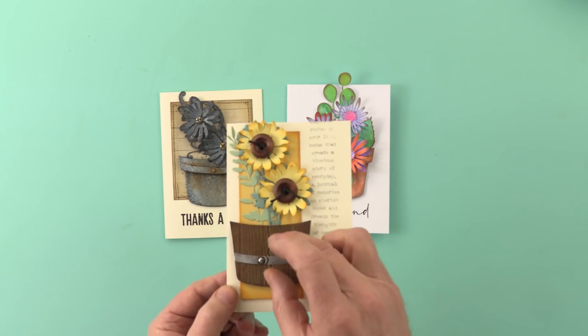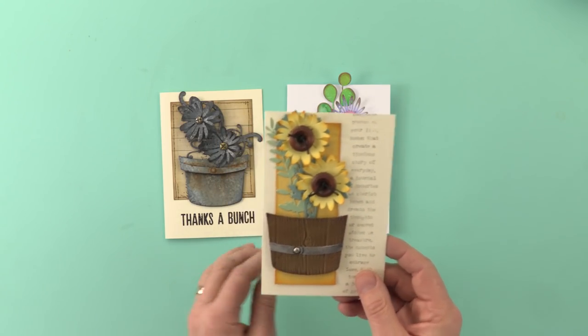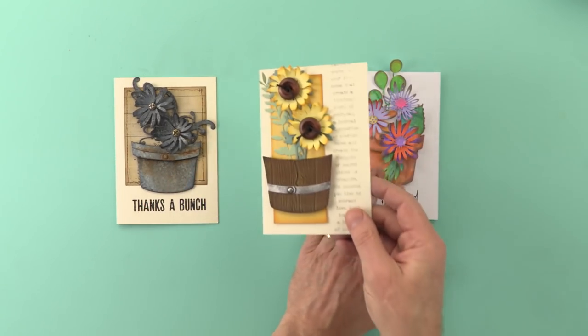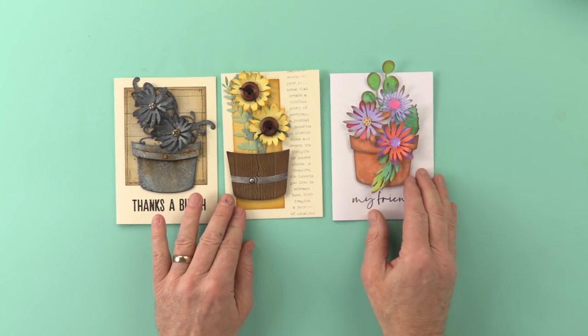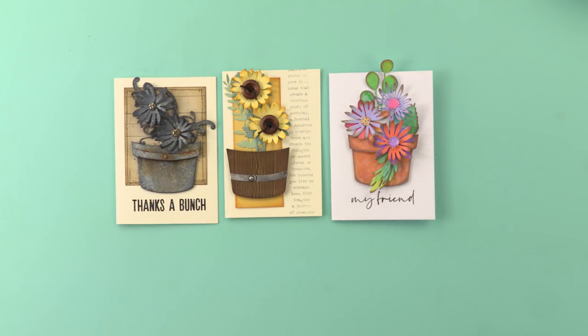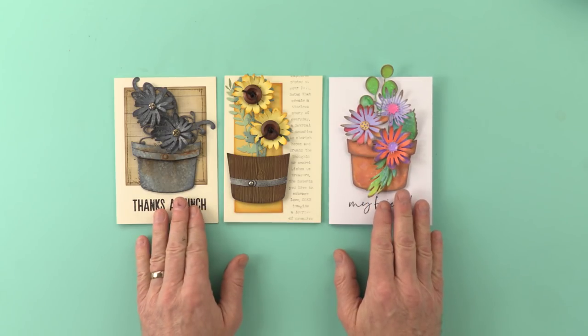And the texture you can see on the pot is actually created using the Lumber 3D embossing folder. So, that's meant to look like wood planks. Very, very effective. I'm sure you'll agree. Three gorgeous cards from one gorgeous die. Very, very versatile. If you love your florals, you can't go wrong with the Potted die. And there we have it.